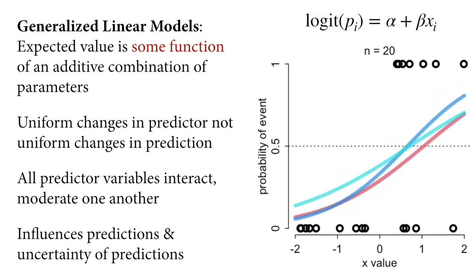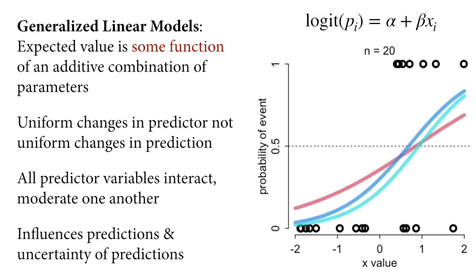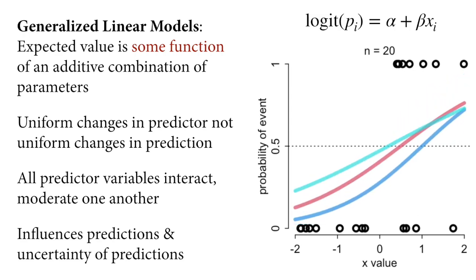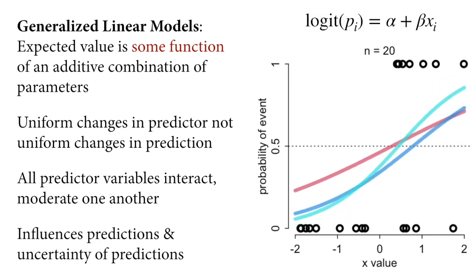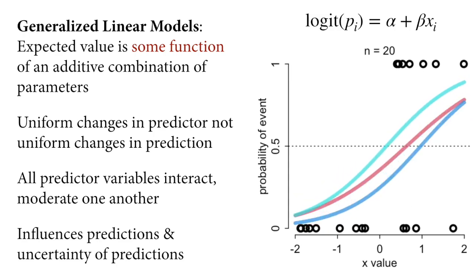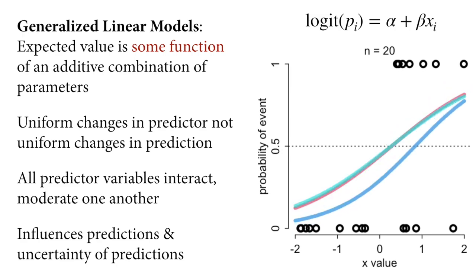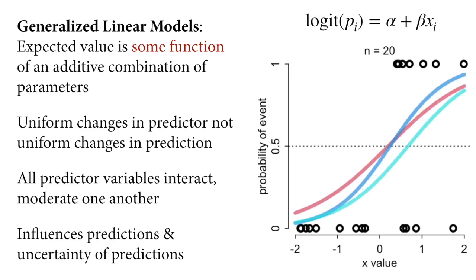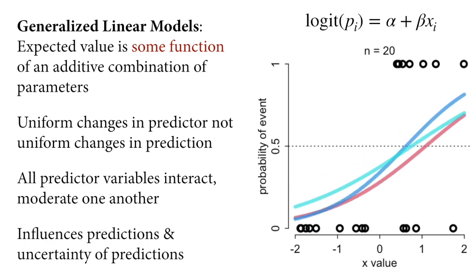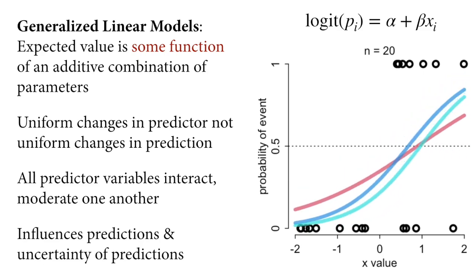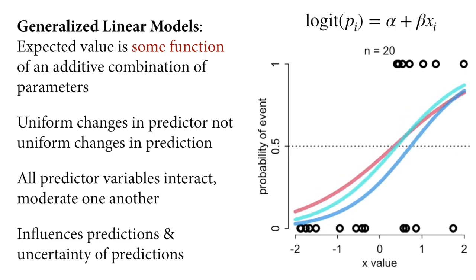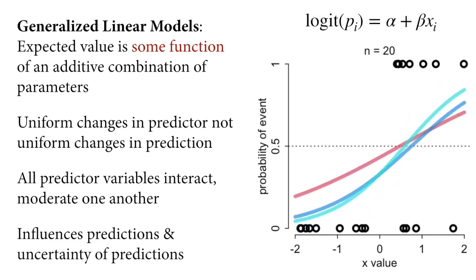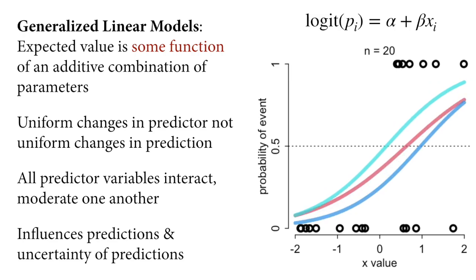Another feature of generalized linear models is that all the predictor variables interact. If any one of the predictor variables pushes the prediction towards zero or one, then the effect of any other predictor will be smaller. In contrast, if the x value were near zero, then any change in any other predictor variable would have a larger effect on the outcome. All of this doesn't only affect the expected values, but since we're doing Bayesian modeling here, it affects the whole distribution of the predictions, including the uncertainty. The uncertainty in generalized linear models is often highly asymmetric, and we need to pay attention to that as well.